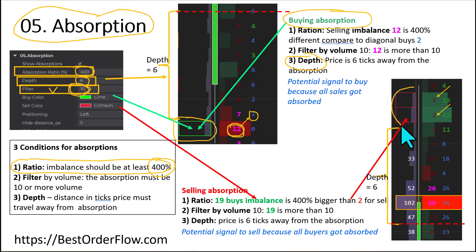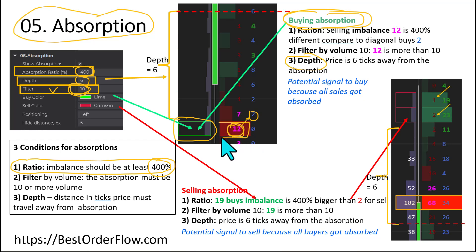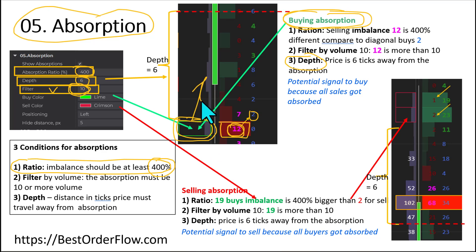What does selling absorption mean? That means all these extreme buyers with their imbalances are no longer able to move the price up, and it becomes a signal for us to sell. And the same for buying absorption — on the buying absorption, we see that aggressive sellers create imbalance and try to sell, but all their sales were absorbed and no longer move the price down. That's why buying absorption means a potential signal to buy. So the price actually went higher and created a green candle.